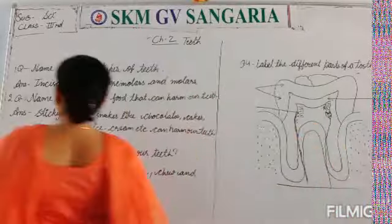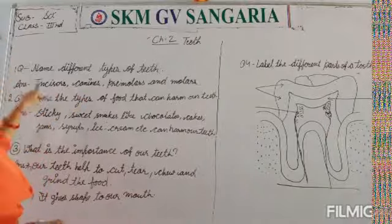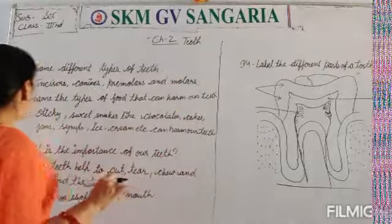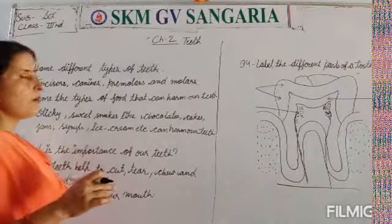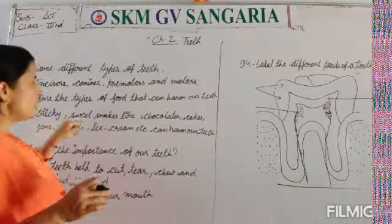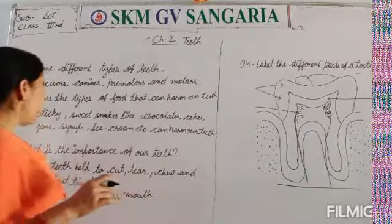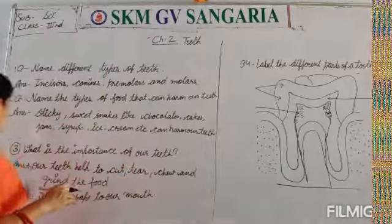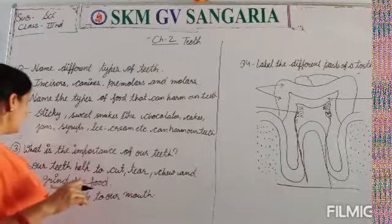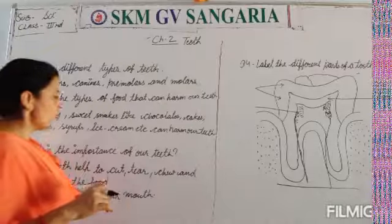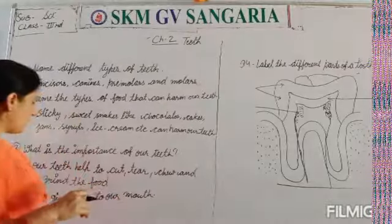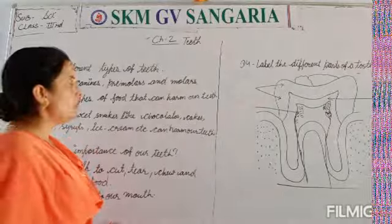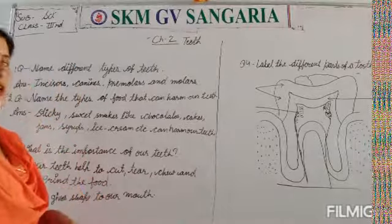Let's revise again. The different types of teeth are: incisors, canines, premolars, and molars — these are the four types. The types of food that can harm our teeth are sticky sweet snacks like chocolate, cake, jam, ice cream, etc. The importance of our teeth: our teeth help to cut, tear, chew, and grind the food, and they give shape to our mouth and face.